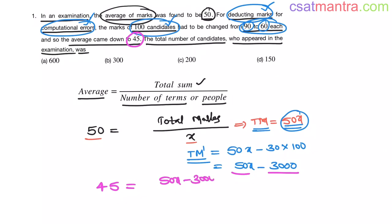Candidates are remaining same, that is x. Now this equals 50x minus 3000 equals 45x. 45x.